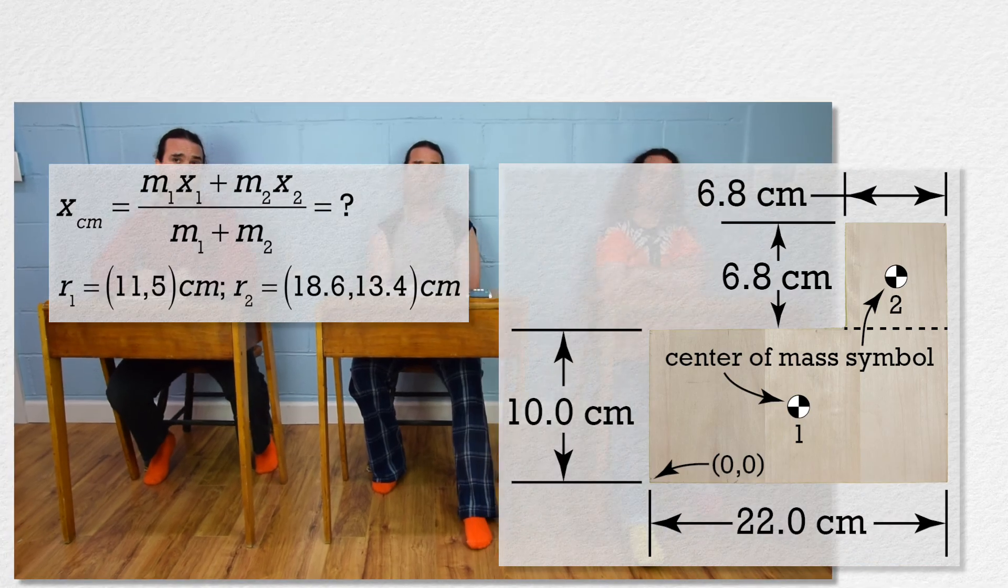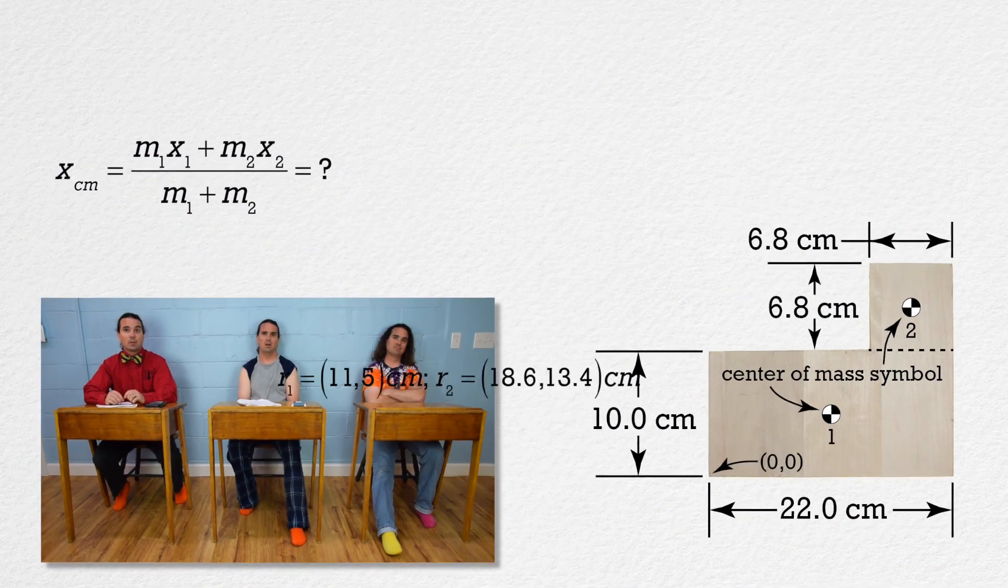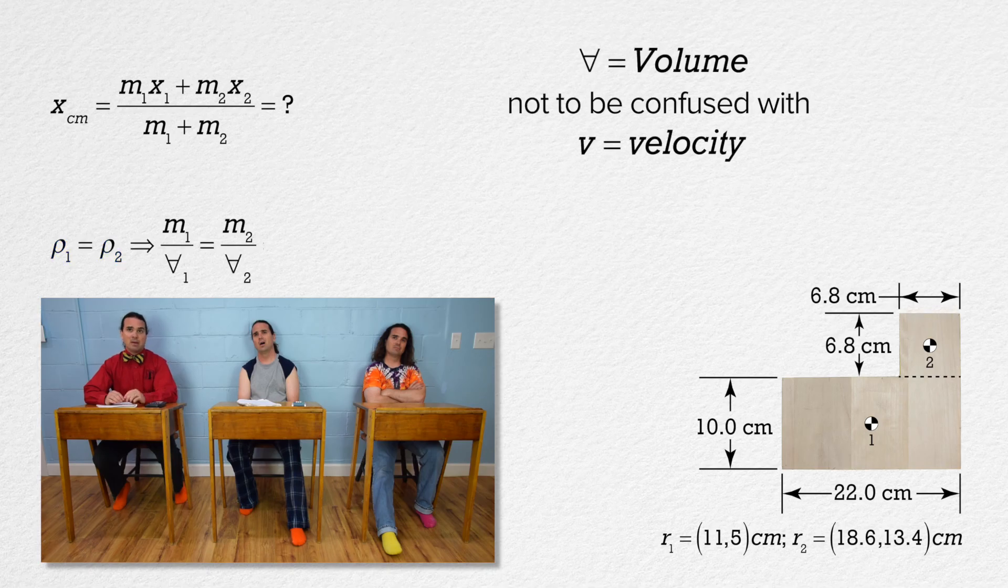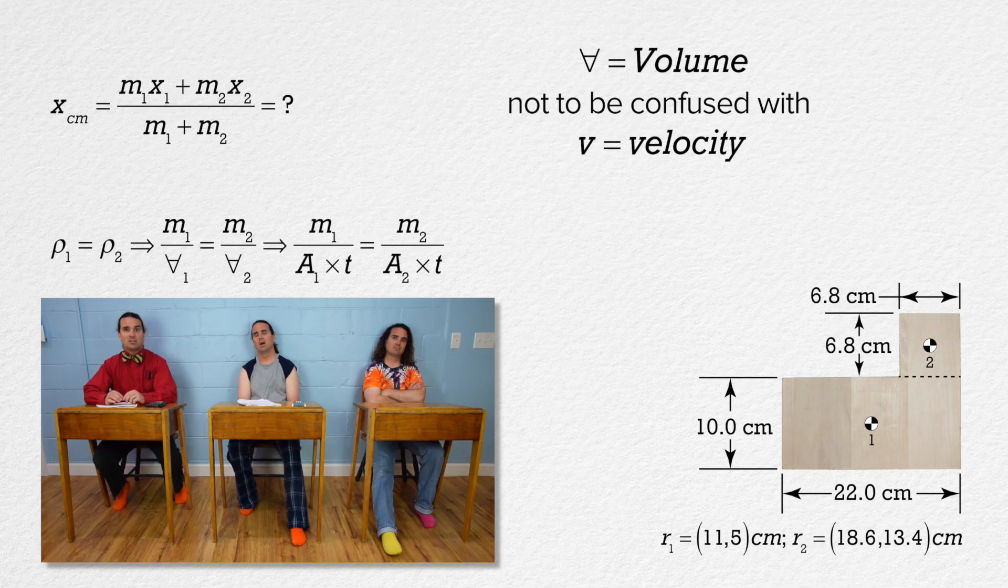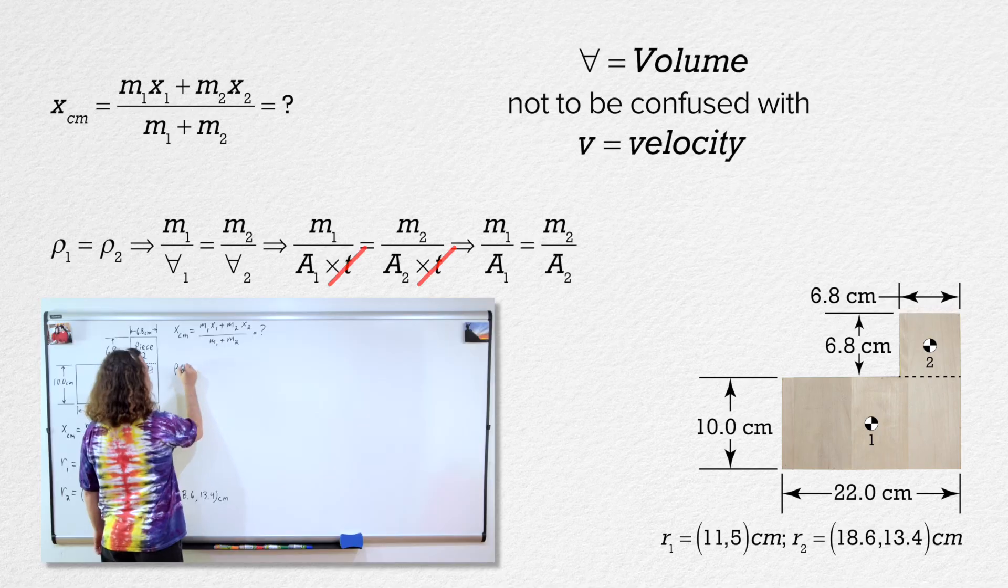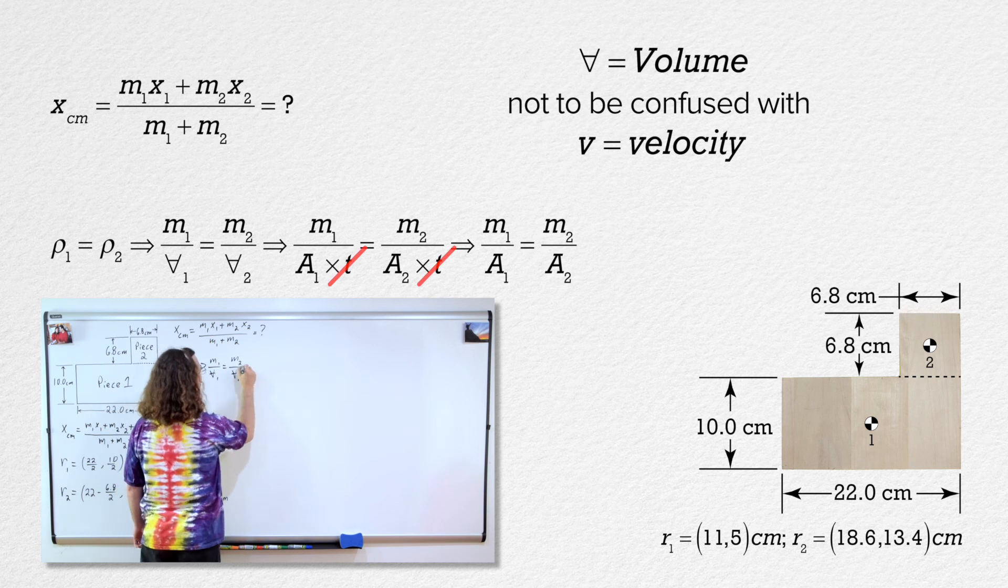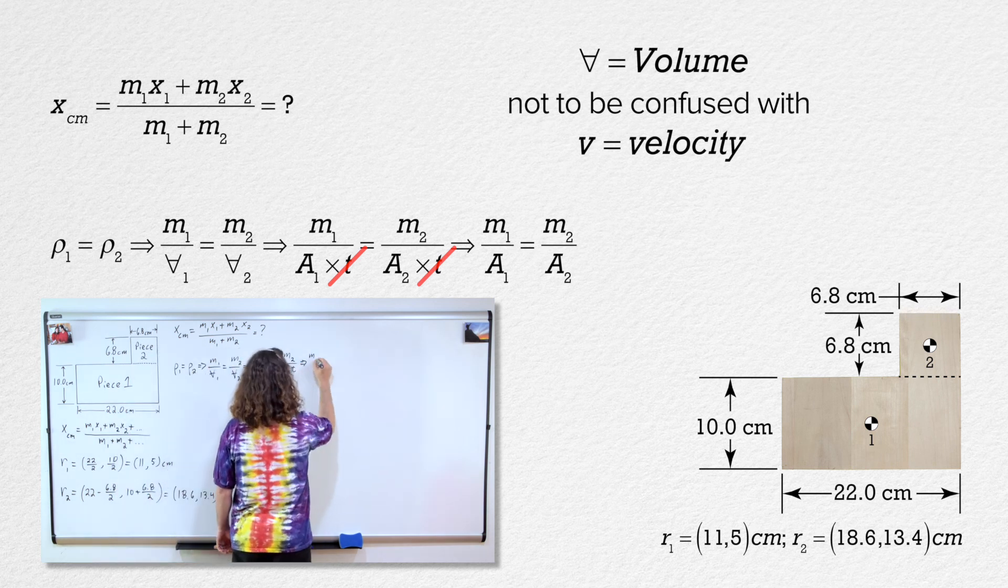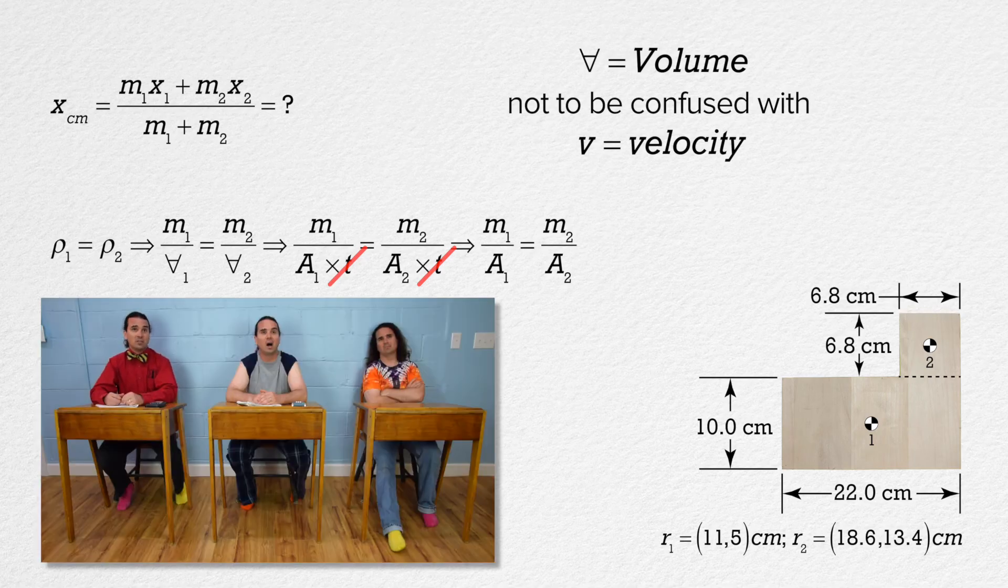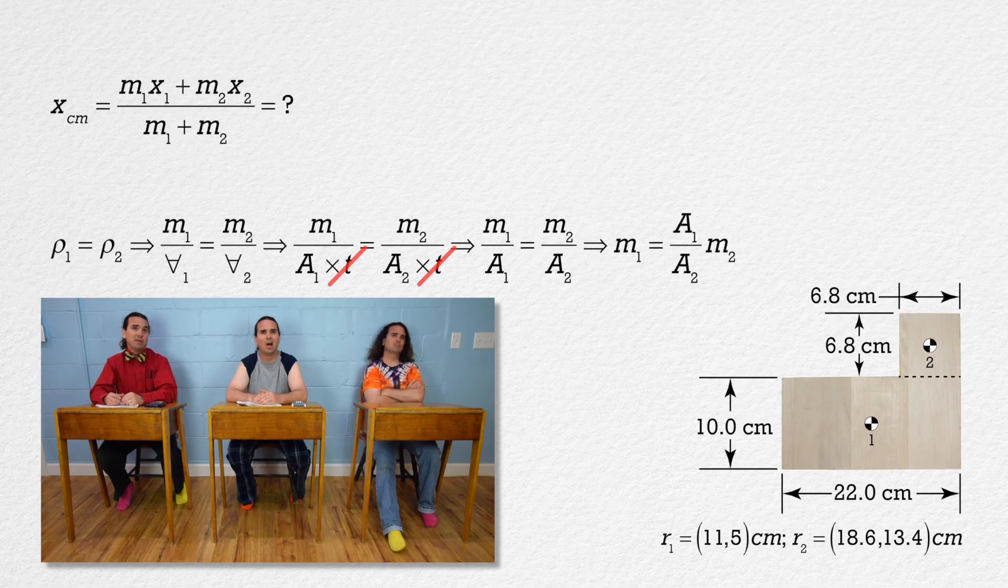We know the density of each piece is the same, right? That is correct, Billy. Please keep going. So density 1 equals density 2. Density equals mass divided by volume. So mass 1 divided by volume 1 equals mass 2 divided by volume 2. Both volumes are area times thickness, but the thickness for both are the same. So everybody brought thickness to the party.